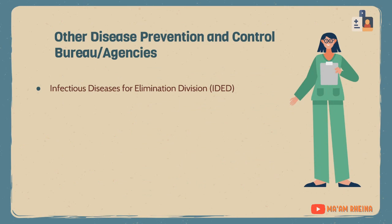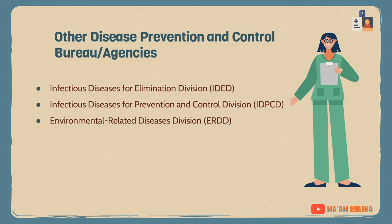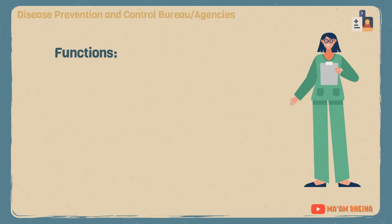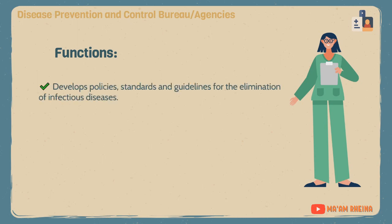Other bureaus or agencies for disease prevention and control include: IDED, the Infectious Diseases for Elimination Division; IDPCD, the Infectious Diseases for Prevention and Control Division; ERDD, the Environmental Related Diseases Division; ODD, the Occupational Diseases Division; ENCDD, the Essential Non-Communicable Diseases Division; and LRDD, the Lifestyle Related Diseases Division.